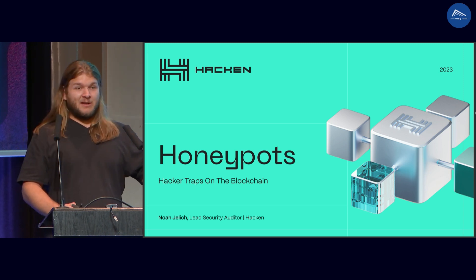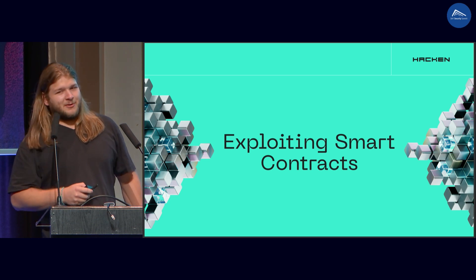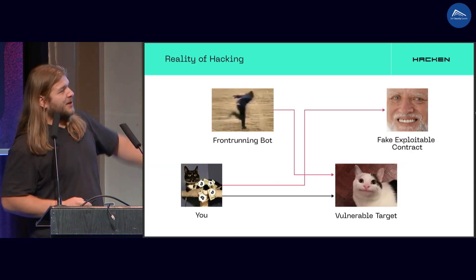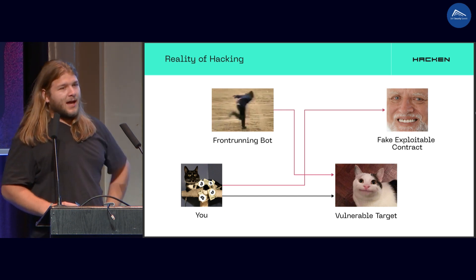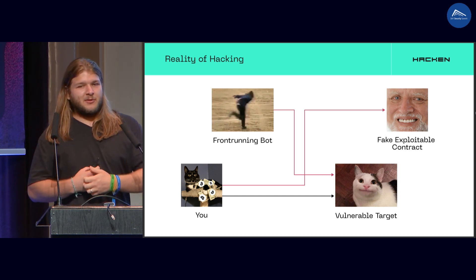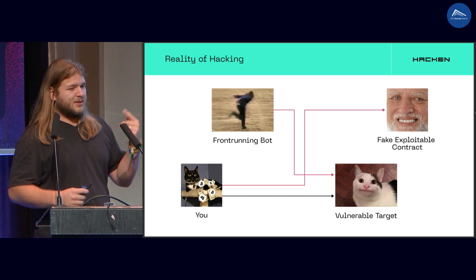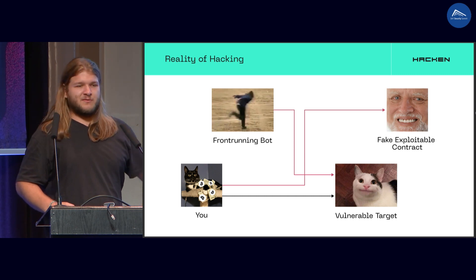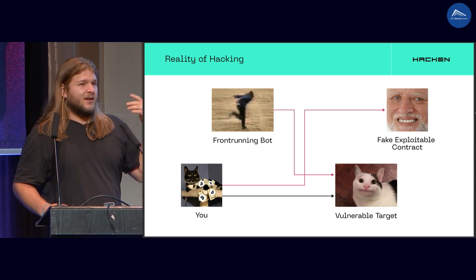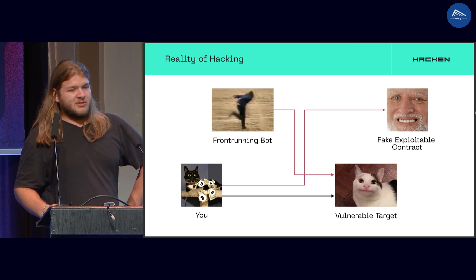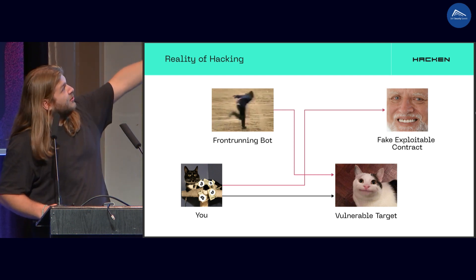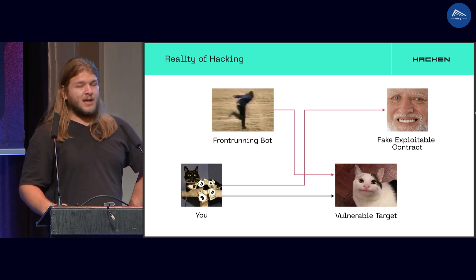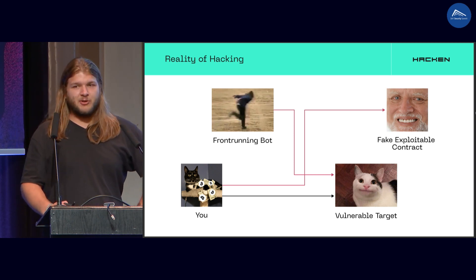To skip about 25 slides, let's go to exploiting smart contracts. You want to exploit a smart contract — here is you. You find a target and you think you've got an exploit. And there are two things that could happen. One, front-running bots — somebody sees it on the mempool because you didn't use FlashBots to protect yourself, and you miss your chance. Option two: you are a bad hacker. You did not correctly identify your target, and you were trapped by something called a honeypot.